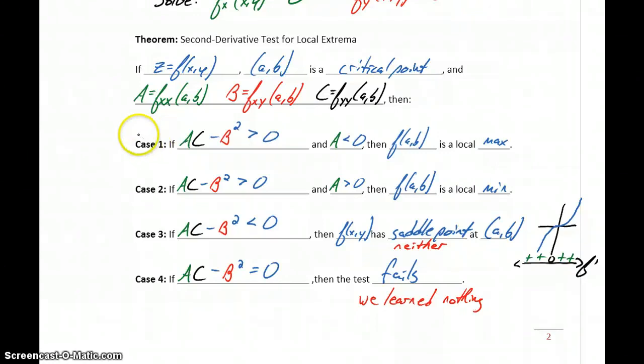So the three that we'll be concerned with will be looking at case one, two, and three, finding these values for A, B, and C, and then classifying our point as meeting one of those three cases.